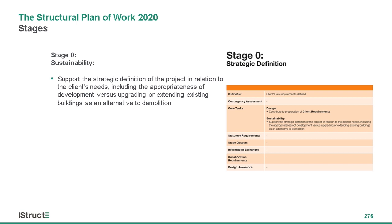Going through the various stages and picking up on the sustainability aspects: Stage zero — we recognise that structural engineers are not necessarily always involved at this stage. This is usually when the client is deciding what's best to do, whether to even have a project or not. From the structural engineer's point of view, it's about supporting the strategic direction — for example, looking at whether you actually need to knock down your building and build a new one, or if there are other ways of achieving your goals.